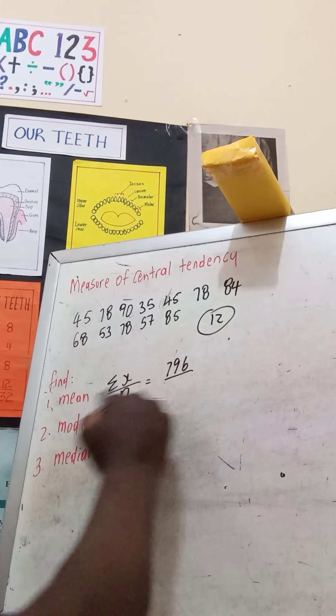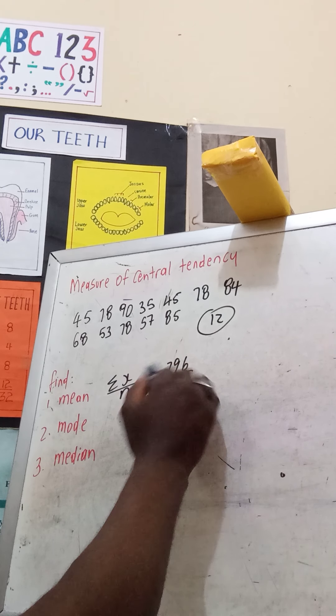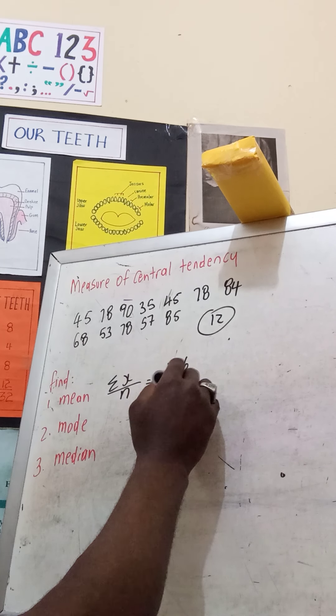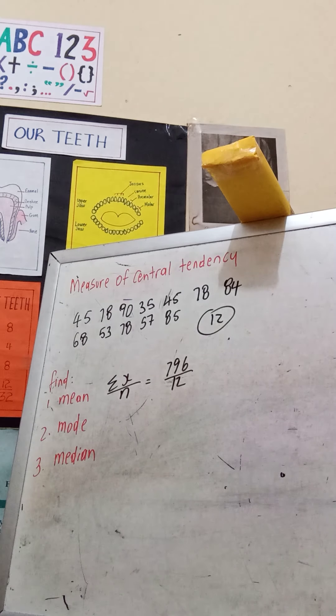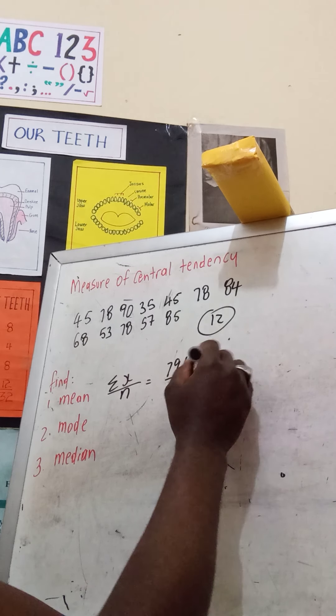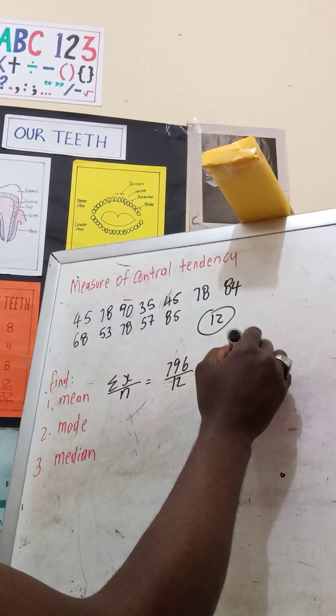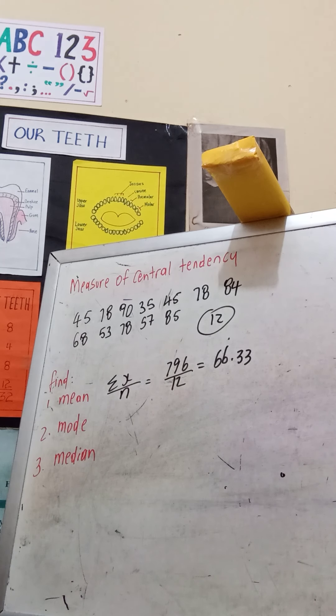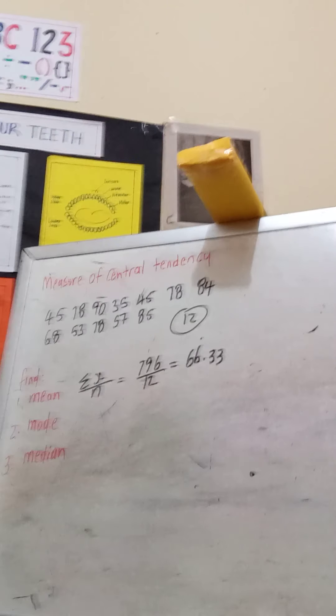When you add all of this together you get 796, and the number of students is 12. So 796 divided by 12 gives you 66.3.